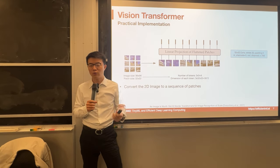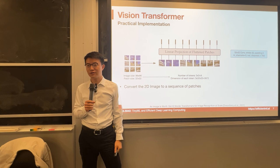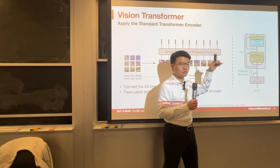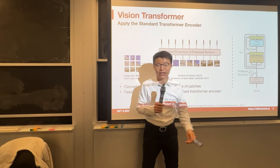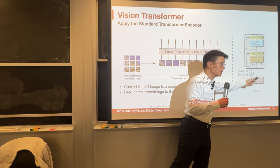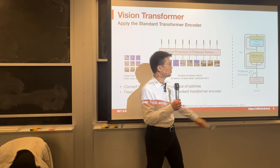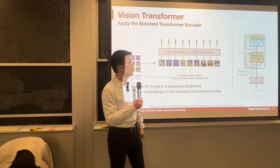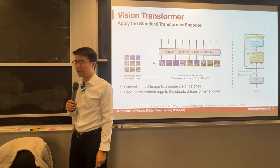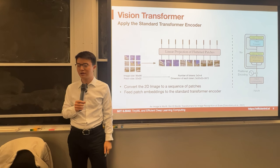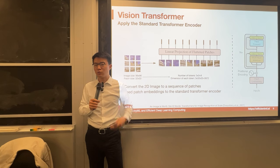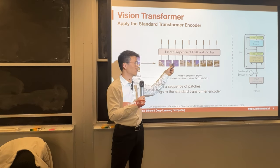After the patch projection, we treat image tokens exactly the same as language tokens. We have the patch embeddings, add positional encoding, then pass through multi-head attention, layer norm, and FFN layers — exactly as in language transformers. One token, another token, another token — the processing is identical.